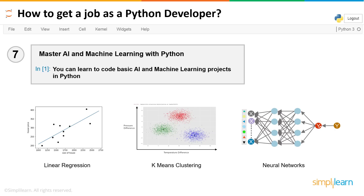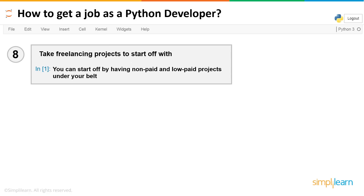Tip number seven: it's never enough to just know a language — you must know how to apply it. With Python, some of its most important and popular applications are in AI, machine learning, and data science. Master AI and machine learning with Python, learn the various algorithms these fields use, and implement projects on them. For example, linear regression and k-means clustering are machine learning algorithms, and neural networks are used with deep learning. Having these applications in your repository displays your skill not only in Python but also in these other fields, increasing your value.